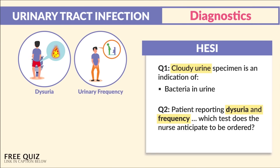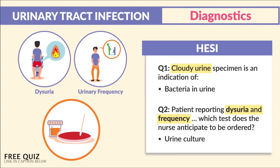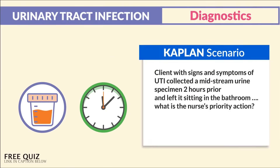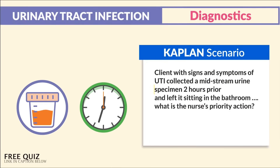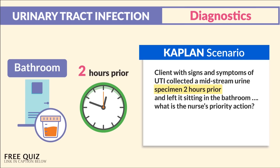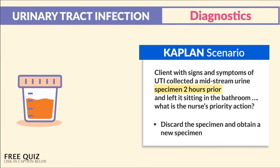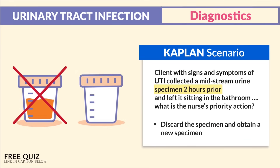The answer was urine culture. A Kaplan scenario states that a client with signs and symptoms of a UTI collected a midstream urine specimen two hours prior and left it sitting in the bathroom. What is the nurse's priority action? The answer is to discard the specimen and obtain a new specimen.